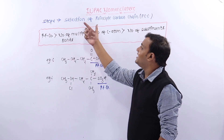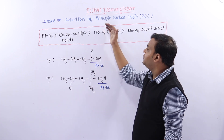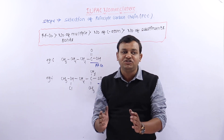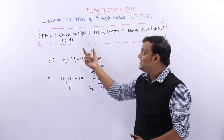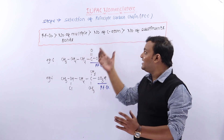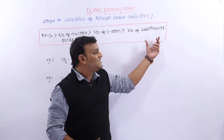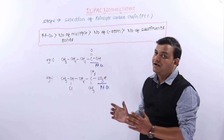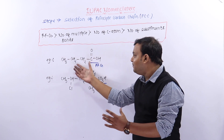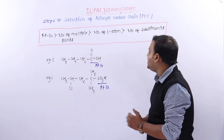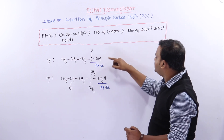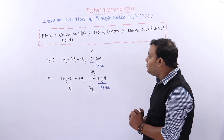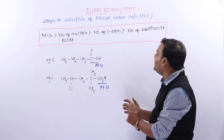Step 2 में हमें करना है principal carbon chain का selection। Principal carbon chain selection: if we have a principal functional group carbon which covers multiple bonds, more than carbon, and more than substituents — we have to follow this order when we select the principal carbon chain.